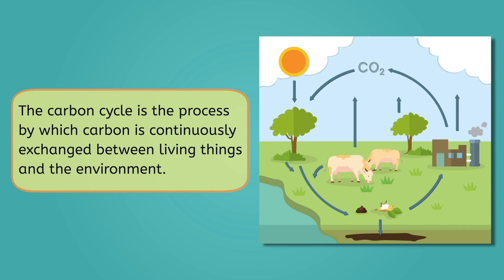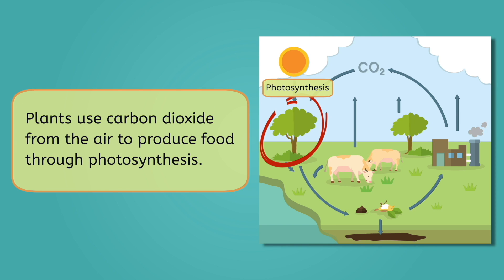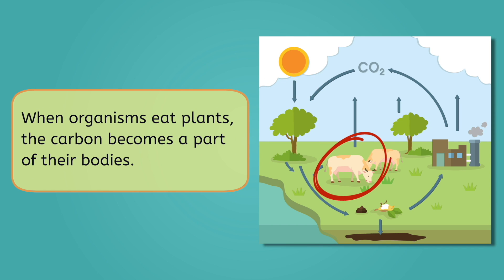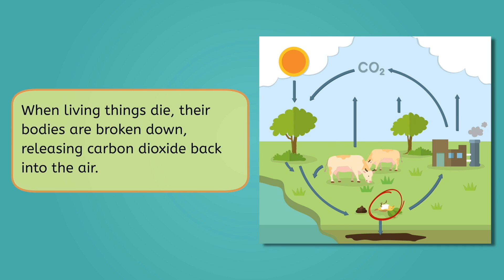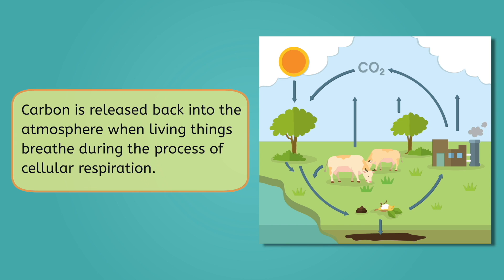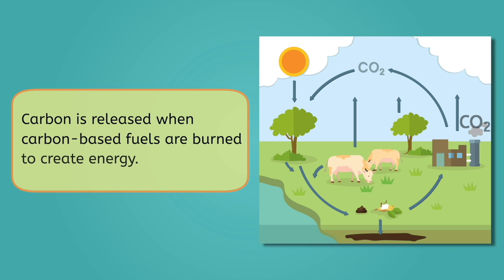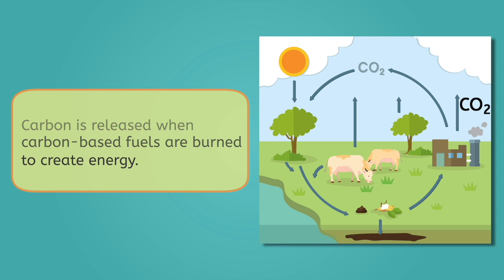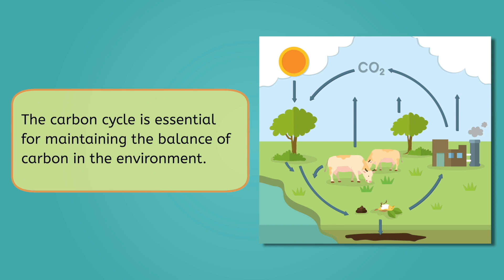The carbon cycle is the process by which carbon is continuously exchanged between living things and the environment. This cycle starts when plants use carbon dioxide from the air to produce food through photosynthesis. When organisms eat plants or other organisms that have eaten plants, some of the carbon becomes part of their bodies. When these living things die, their bodies, and the carbon they contain, are broken down, releasing carbon dioxide back into the air, where it can be taken up by plants again, repeating the cycle. Carbon is also released back into the atmosphere when living things breathe during cellular respiration, and when carbon-based fuels are burned to create energy. The carbon cycle is essential for maintaining the balance of carbon in the environment, which is the foundation by which all life is built from.